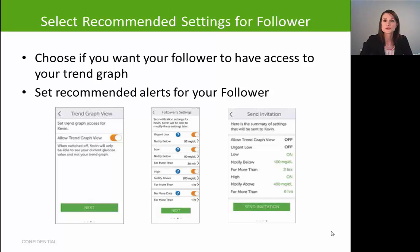The share setup will ask if you want to grant your follower access to your trend graph — meaning can they view up to the last 24 hours of glucose information. You'll then indicate recommended alert thresholds for your follower for high and low glucose. One alert setting to note is the 'No More Data' option: if toggled on, your follower will receive an alert if they're no longer receiving your glucose information, which can be a useful safety feature. Once you've set those recommended alert levels, go ahead and send the invitation.